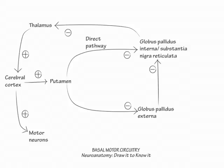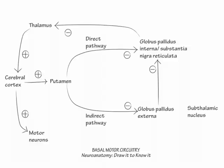This is the simplest version of the indirect pathway. For completeness, however, we need to add the subthalamic nucleus, because some of the fibers in the indirect pathway loop through it, and when it is injured, patients develop wild ballistic flinging movements, called balismus, on the side contralateral to the subthalamic nucleus lesion.